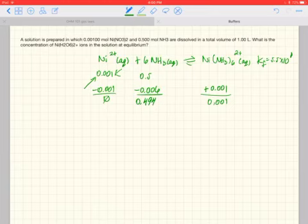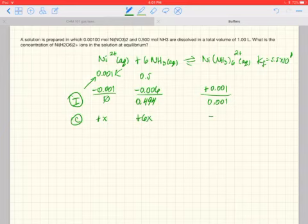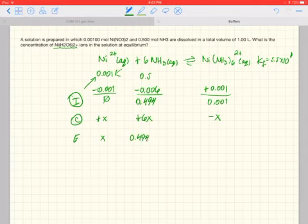Alright, so initially, we're going to pretend like we have these amounts here. The change, we're going to have plus x, plus 6x here, and minus x, and at equilibrium, we're going to have x. We're, of course, trying to solve that because they're asking us what is the concentration of the nickel two ions. And here, we're going to have 0.494 plus 6x, and here, 0.001 minus x. Okay, so let's go ahead and set up the equation here.